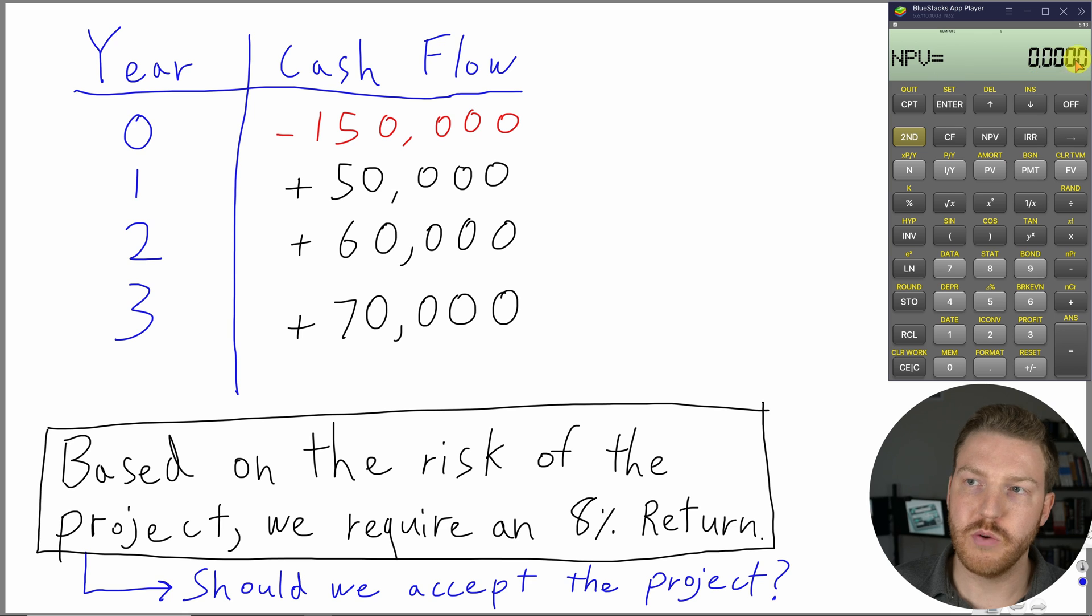So now we're going to compute our NPV. Let's hit compute. And we find that our NPV is $3,304.88. That means that we have a positive net present value for this project and that we should accept the project. Whenever NPV is positive, you should accept the project because that means that project is worth the risk.